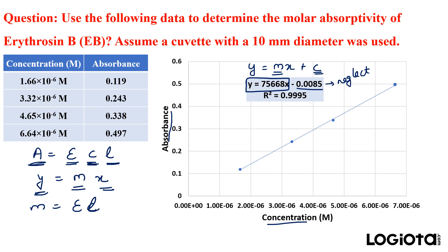Now we know the value of m, we know the value of l. l is the path length which is the size of the cuvette. So here it's given as 10 millimeter. If we convert this into centimeter it will be 1 centimeter.